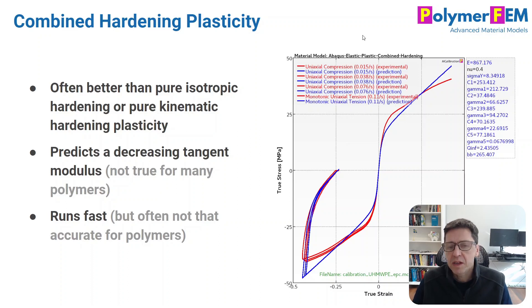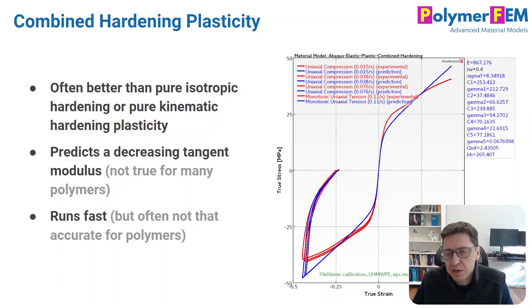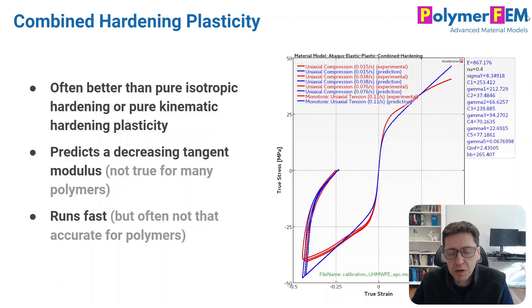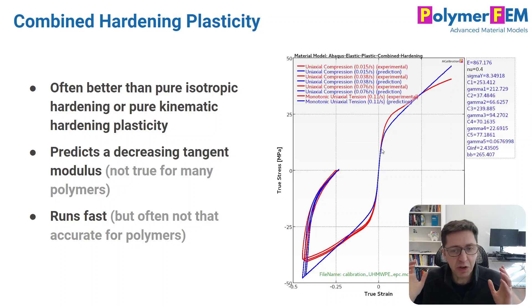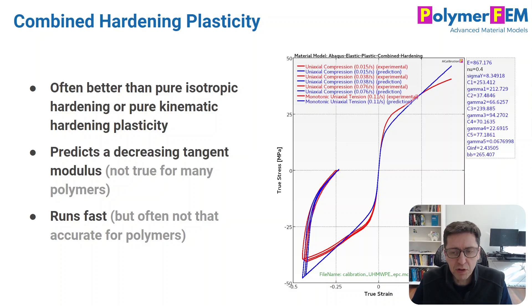To summarize, combined hardening plasticity is an interesting combination of isotropic and kinematic hardening and is often a bit better than either alone. One limitation is that the tangent modulus — the slope of the stress-strain curve — is always decreasing; you can't make it turn back up at large strains, which is typically what you see in many thermoplastics when molecules align and the material becomes stiffer. This model also runs very fast in finite element programs, which people appreciate, but keep in mind it can give poor results if not used carefully.